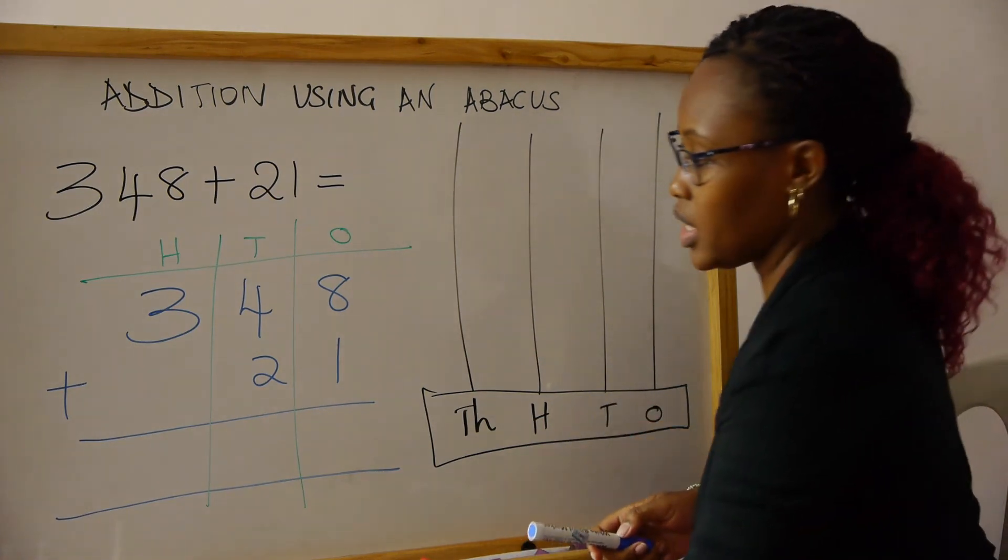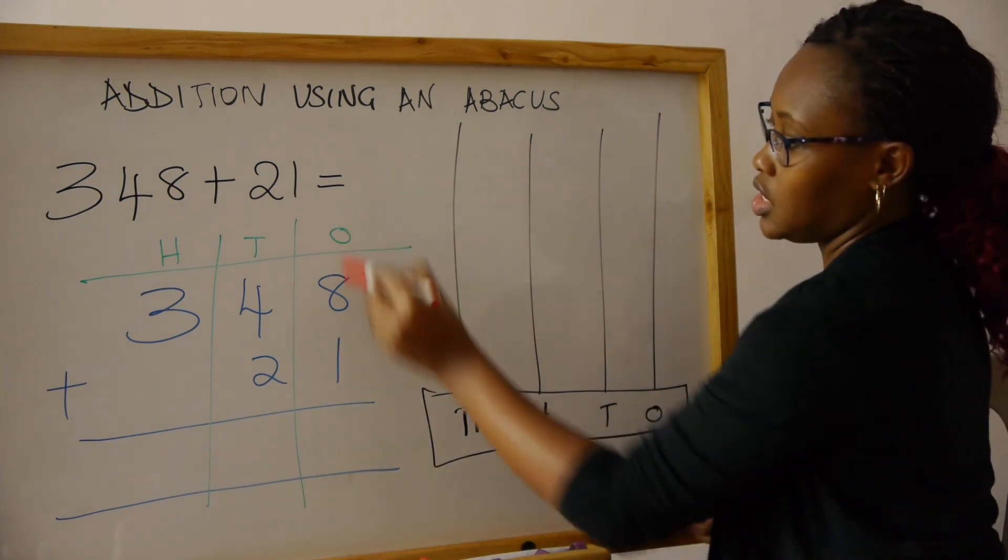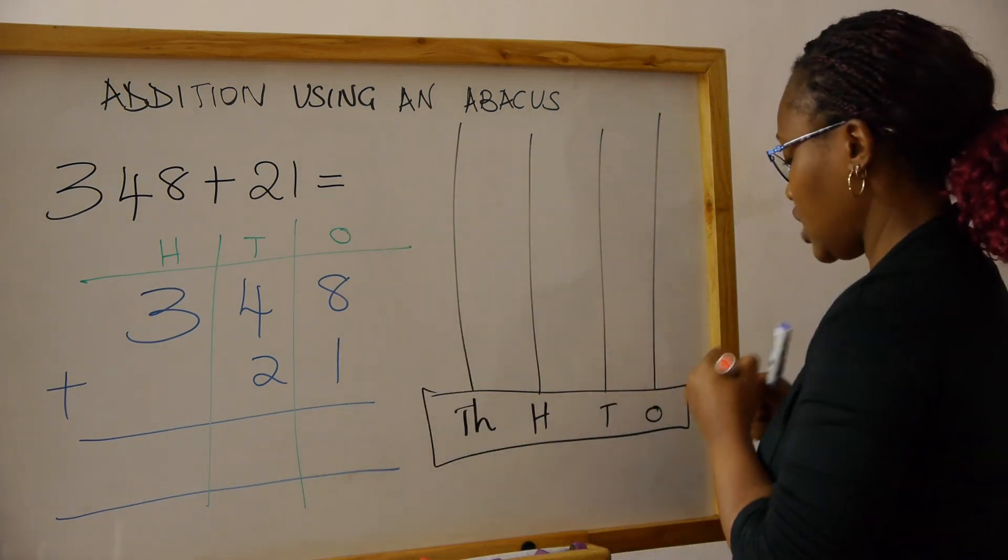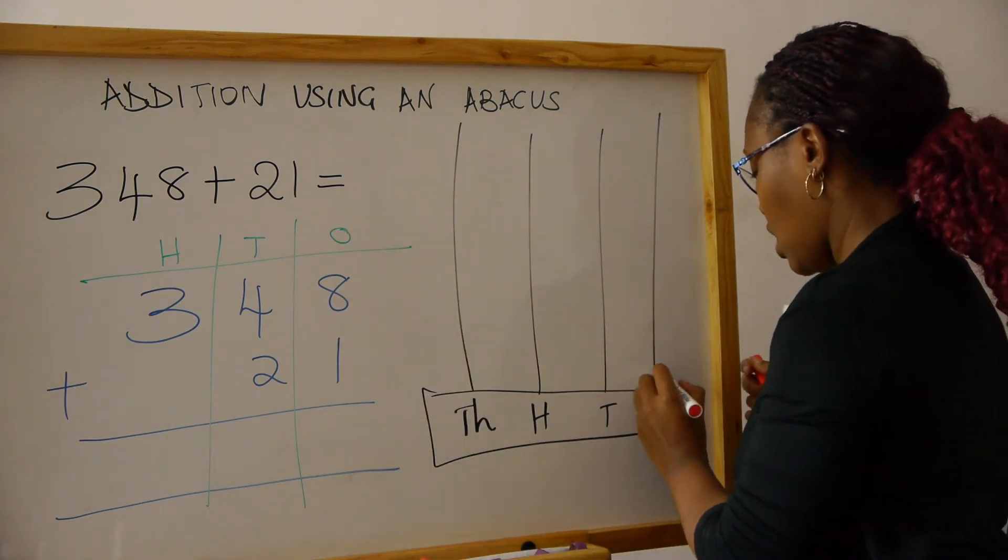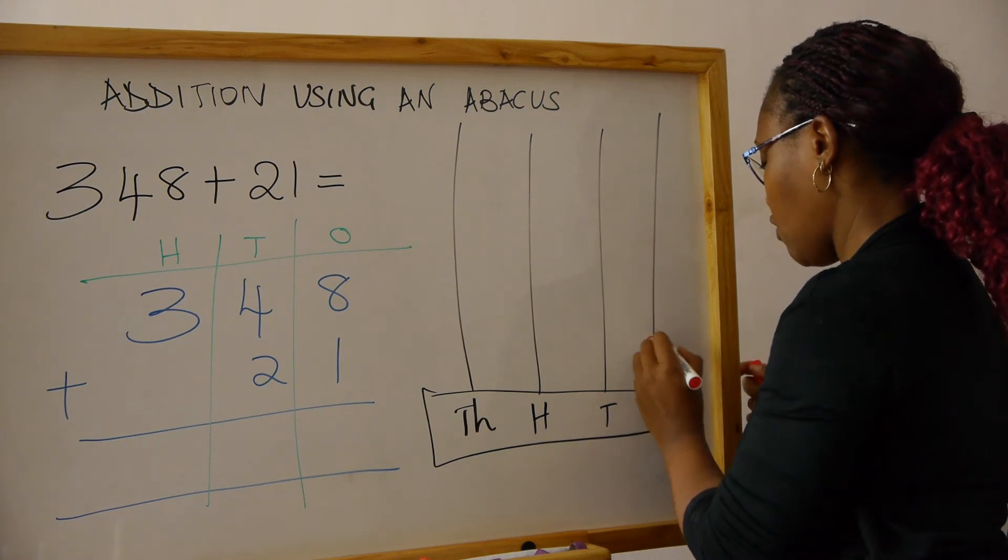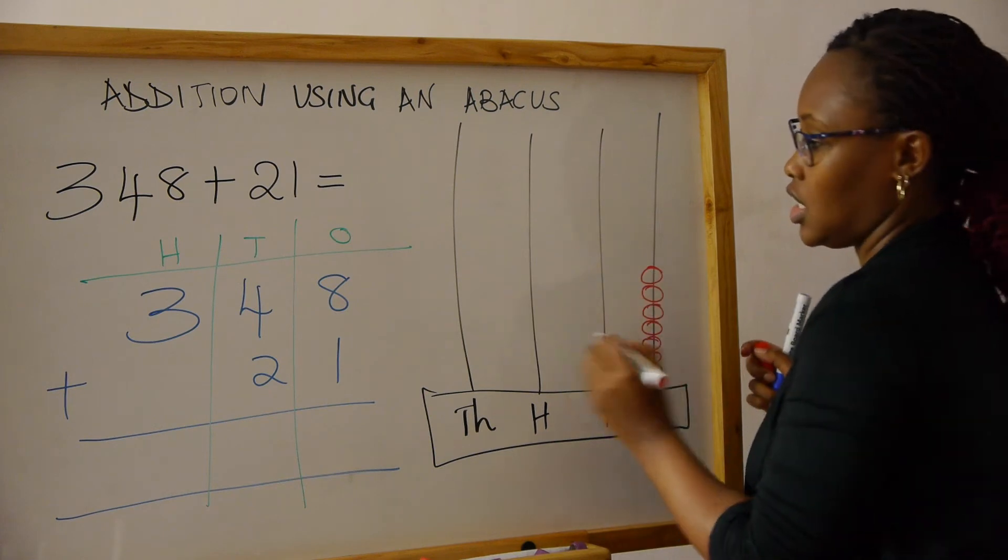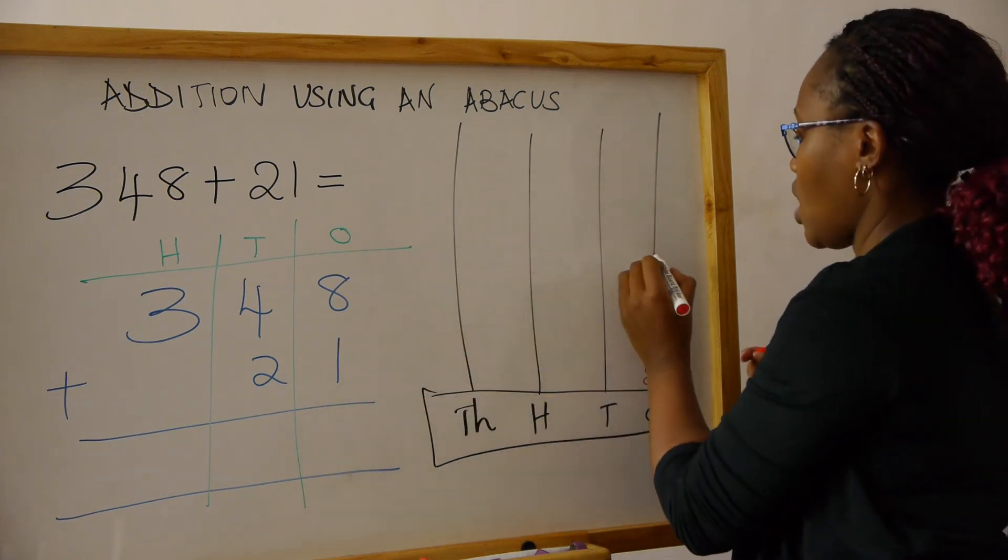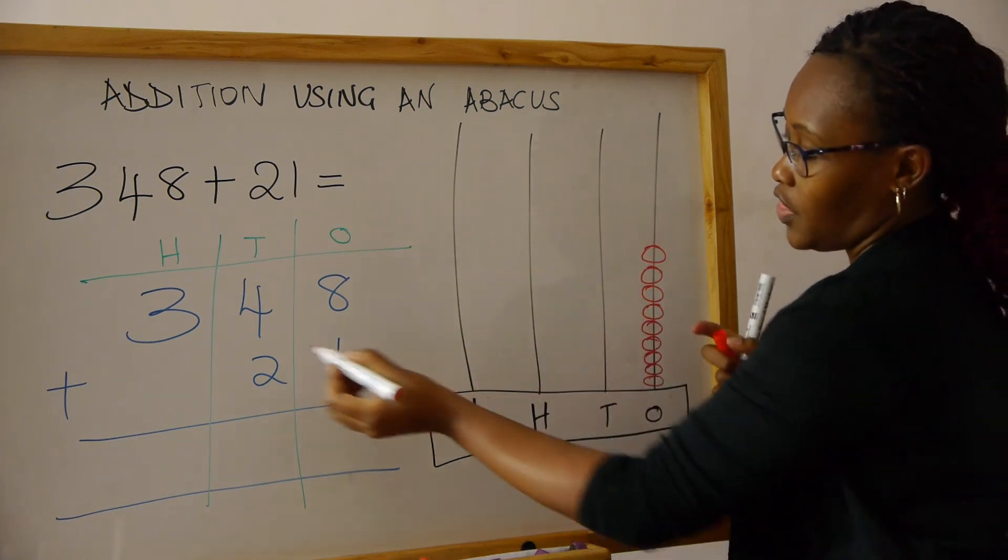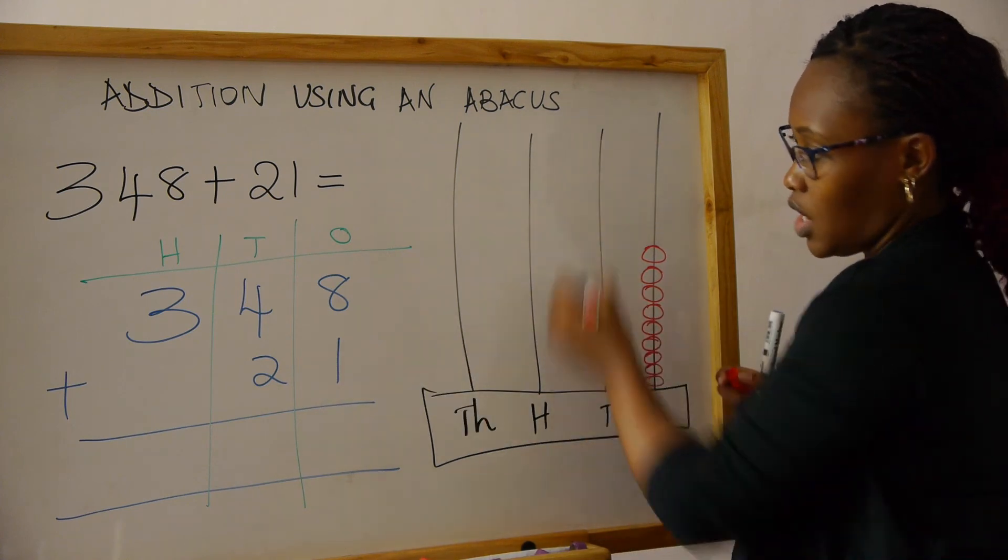We start with the number eight in the ones column. We draw eight beads, and then we put one. And then now we go to the tens column.